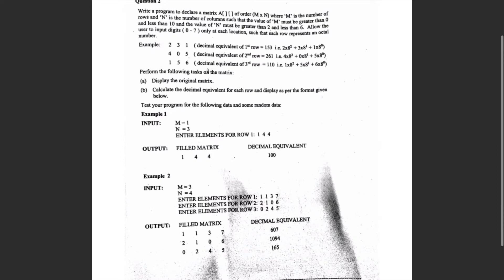Perform the following tasks on matrix A: display the original matrix, then calculate the decimal equivalent of each row and display as per the format given. It again says 'octal number' but 'decimal equivalent' — there is a typo, but nothing is unclear about this question. Let's move on.